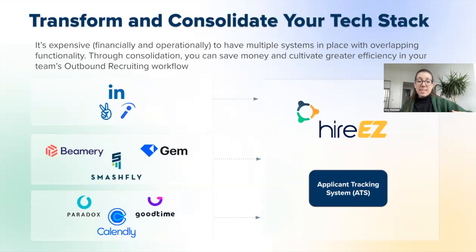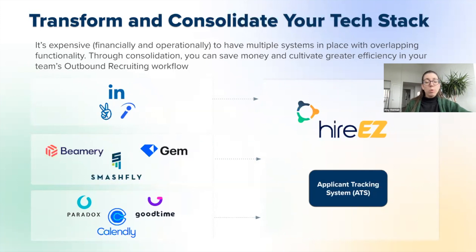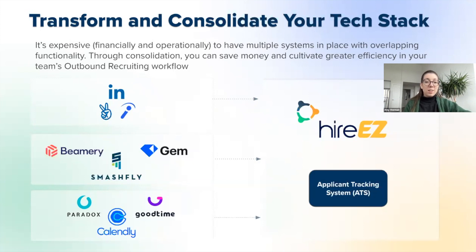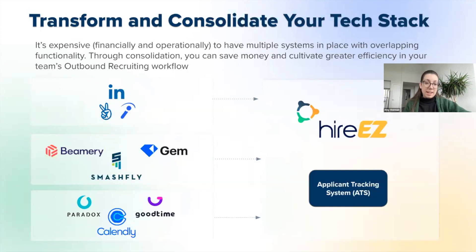Additionally, many TA leaders have shared with me that there are a lot of challenges they face with clearly and cleanly reporting on their business metrics across their hiring goals, pipeline data, et cetera. They have to pull this data from multiple different systems, run those reports, and manually consolidate them into spreadsheets or yet another system. It's so important right now — more than ever with the current economic landscape — that we're able to have a clear understanding of our team's performance and impact on business goals.